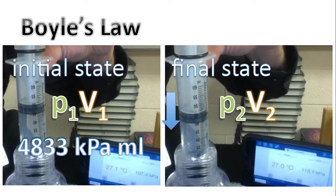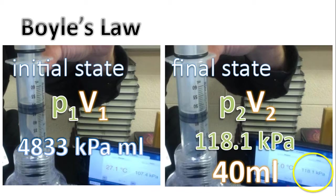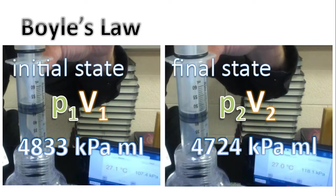Our final state could be after we push the piston downwards. Notice the volume has now decreased to 40 mL, but that has resulted in an increasing pressure—118.1 kilopascals. Once again, multiplying these two numbers, we end up with 4,724 kilopascals milliliters.